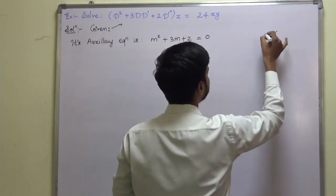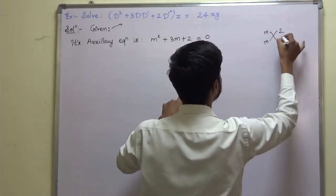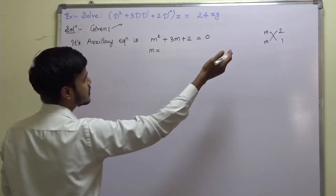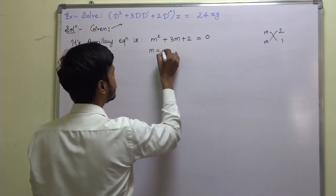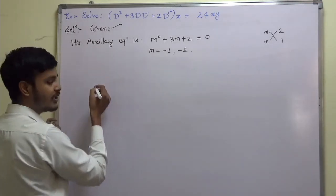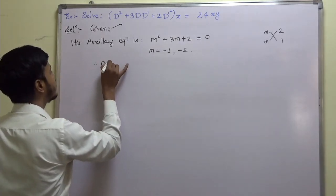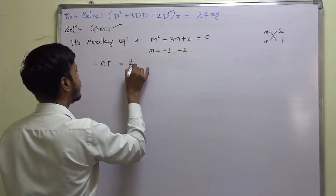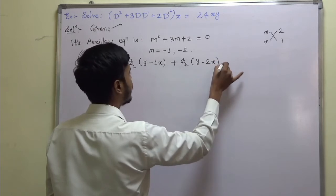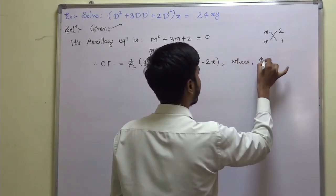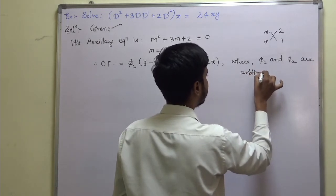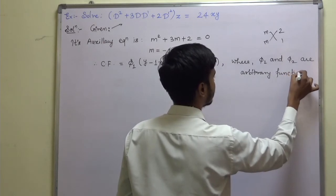Find out the roots. Factoring m-squared plus 3m plus 2: factors are (m + 2)(m + 1) = 0, so m equals minus 1 and minus 2. Therefore, the complementary function CF equals phi-1(y minus x) plus phi-2(y minus 2x), where phi-1 and phi-2 are arbitrary functions — not arbitrary constants, but arbitrary functions.